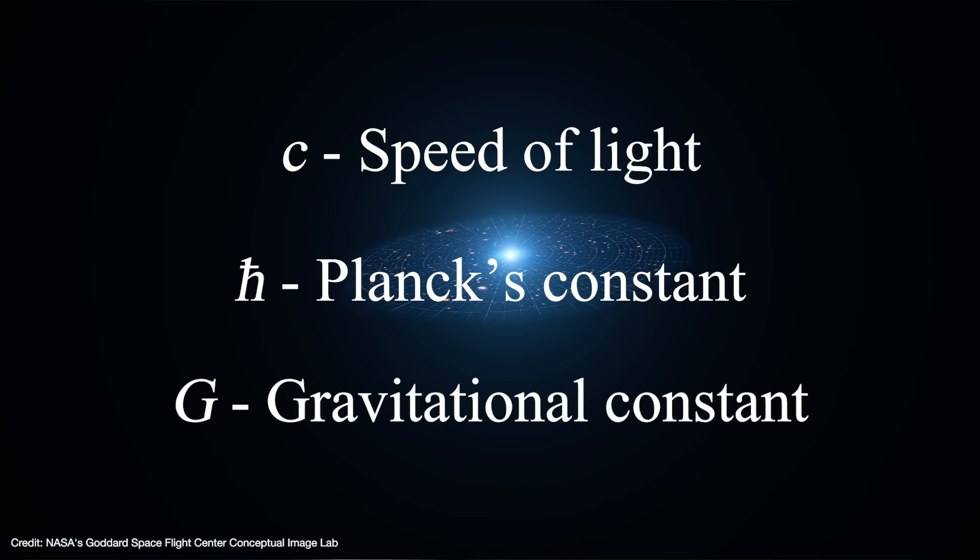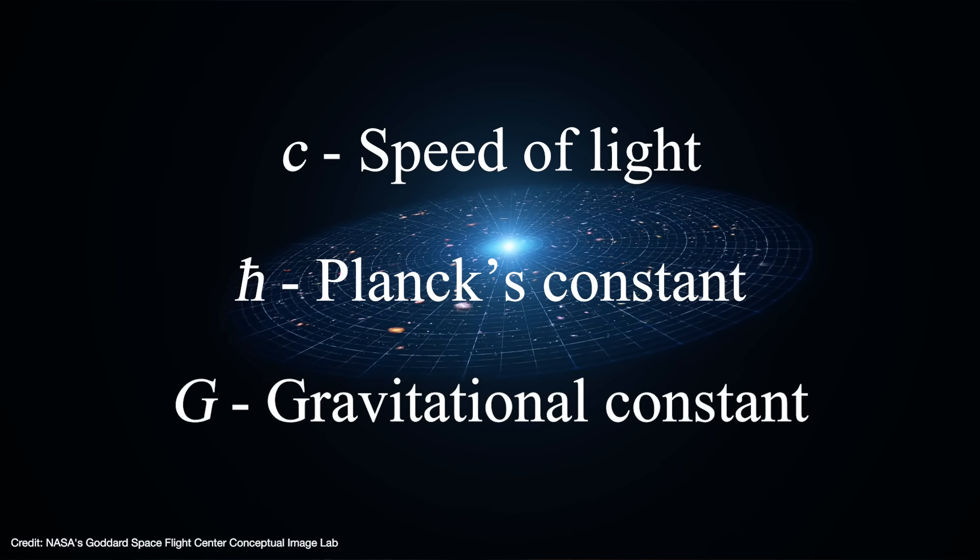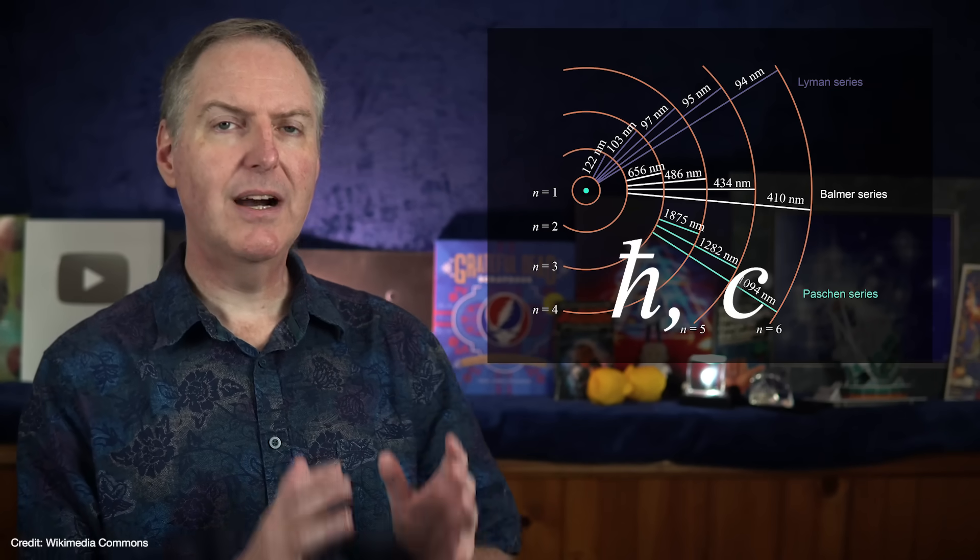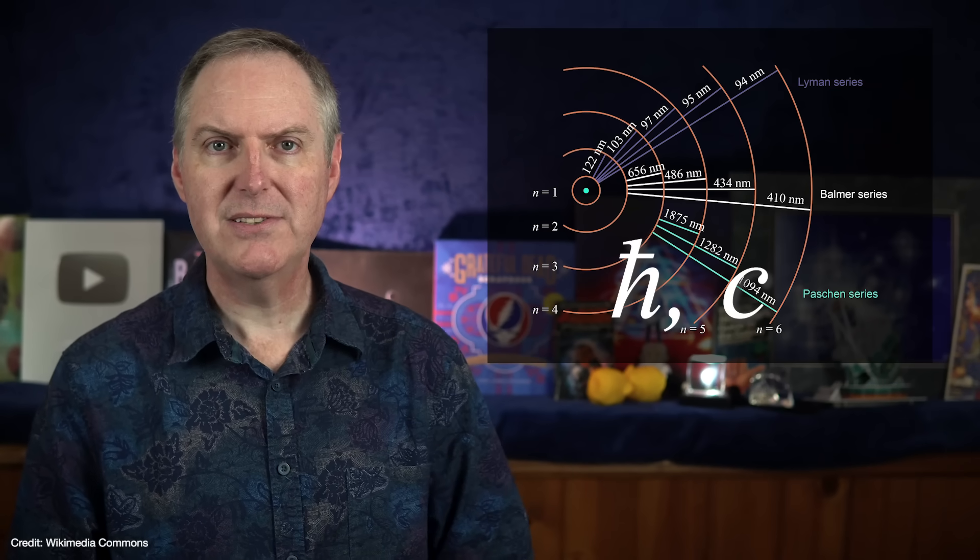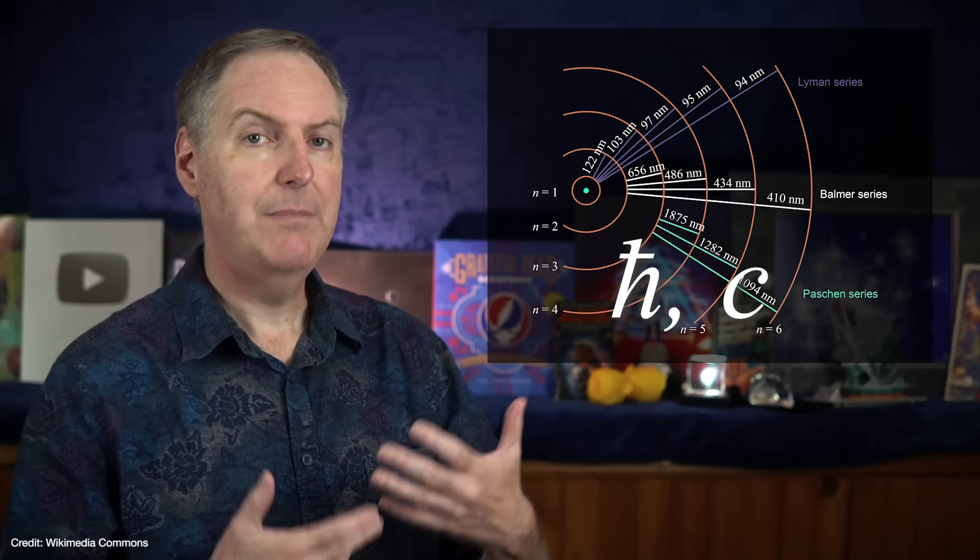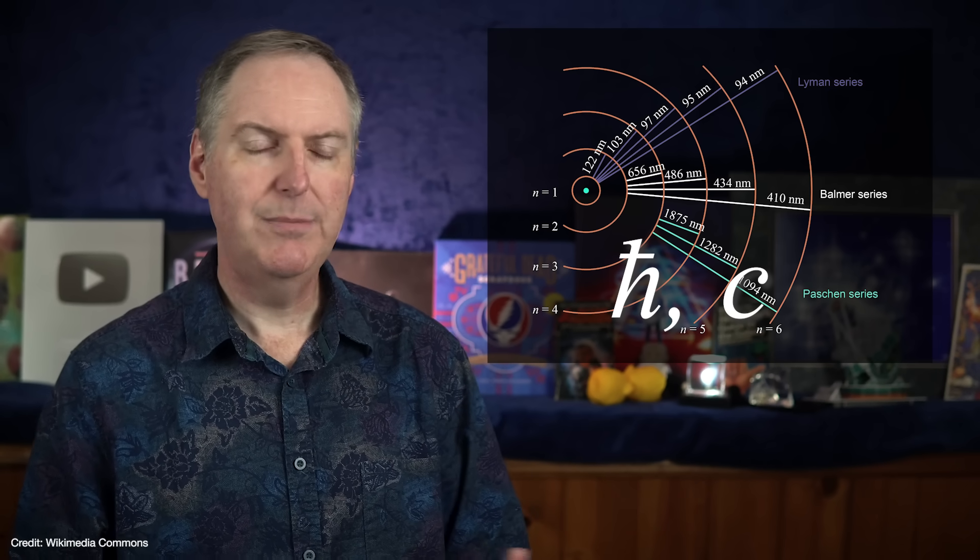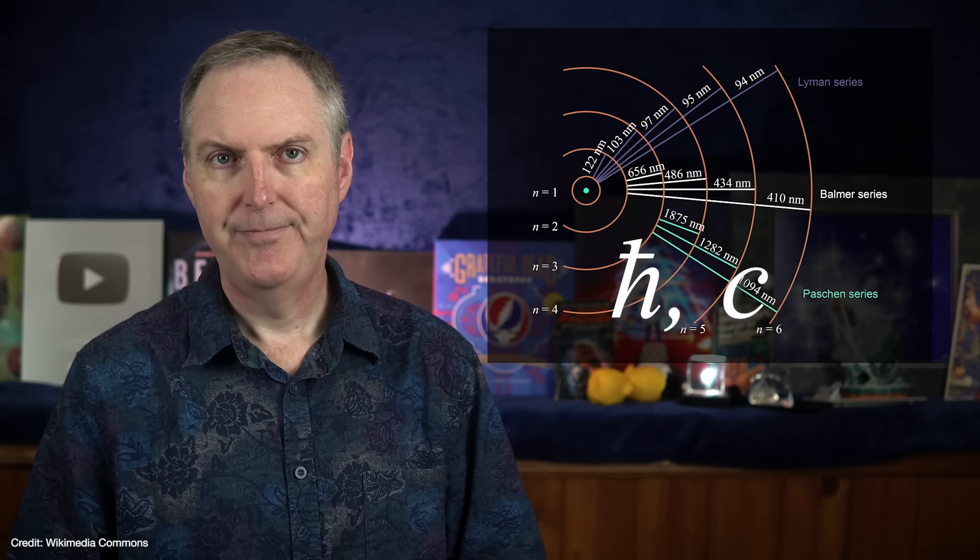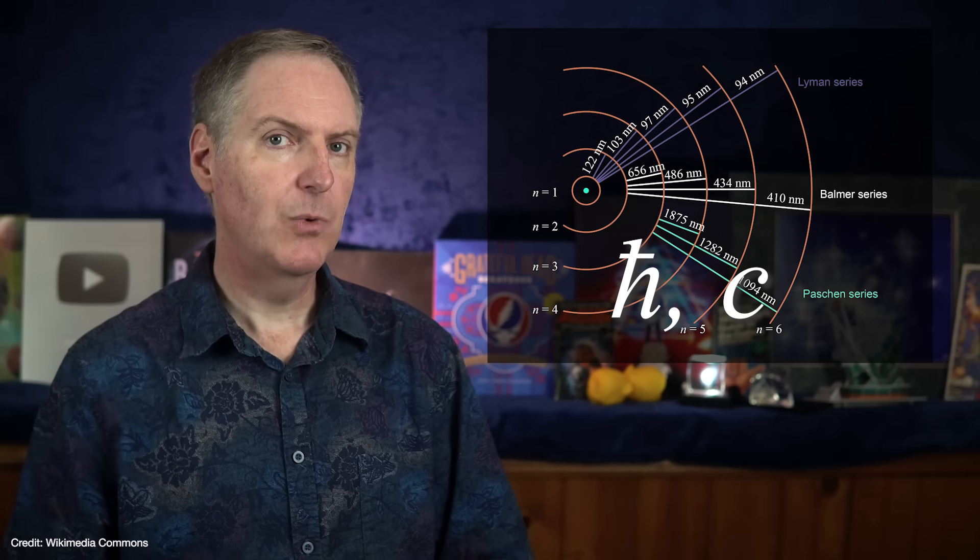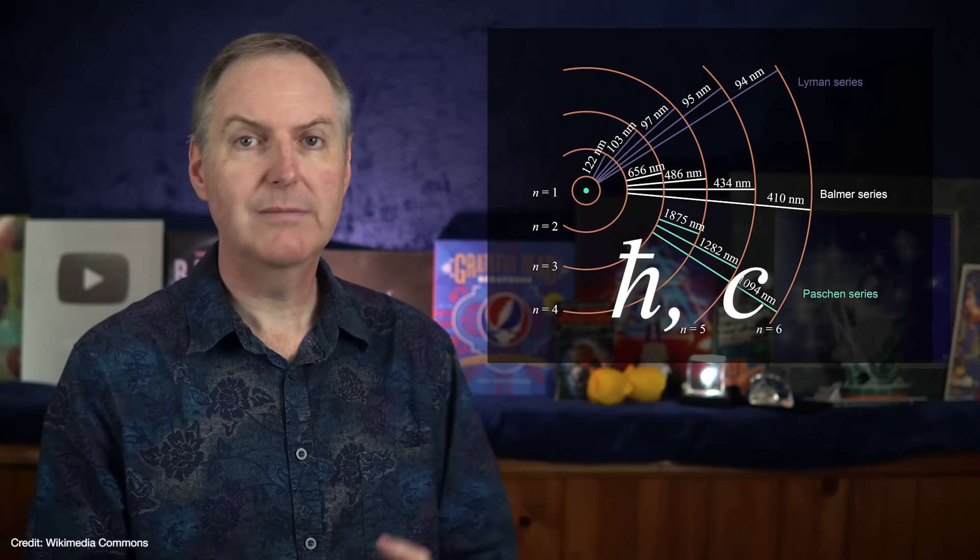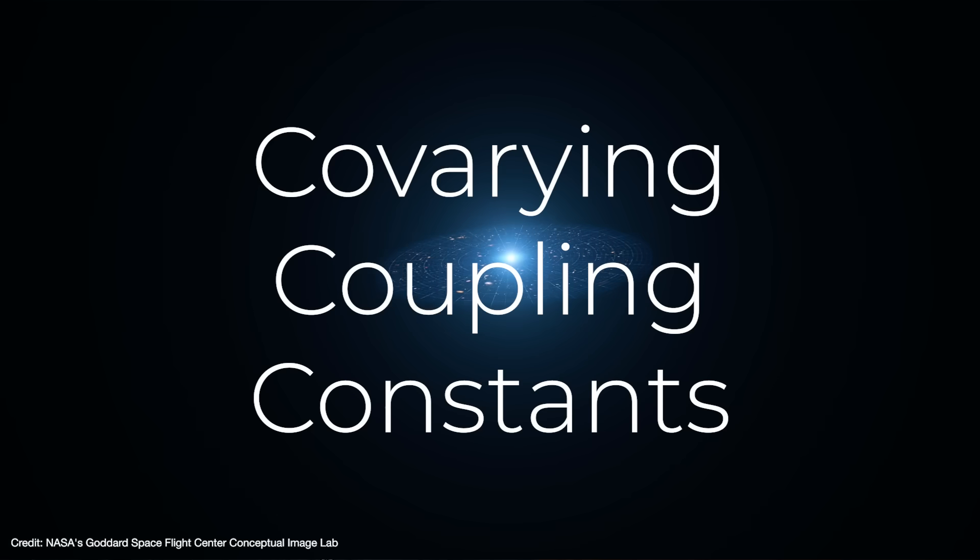And that means things like the speed of light, Planck's constant, and the gravitational constant were different in the past than they are today. However, atomic transitions are governed by two of the fundamental constants. So if one of them were to change, or if they both changed at different times, then the spectra from high redshift quasars would be unrecognizable. To address that problem, Gupta invokes a mechanism where all of the constants change together so the atomic transitions and spectral lines still work correctly across all redshifts. He calls this idea covarying coupling constants.